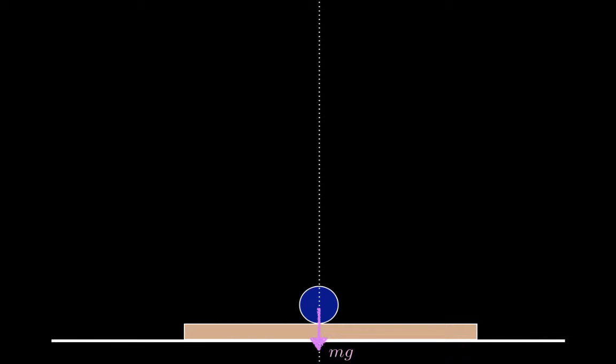The forces are mg, the normal force, and the force of static friction. Friction is static because the ball does not slip, and it's to the right because if the ball were to slip, it would slide to the left relative to the board.